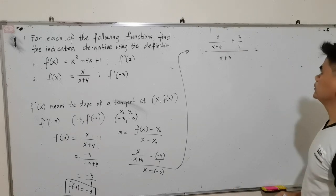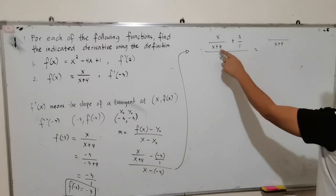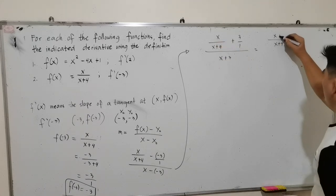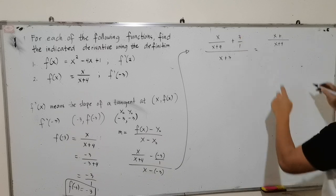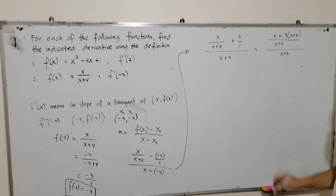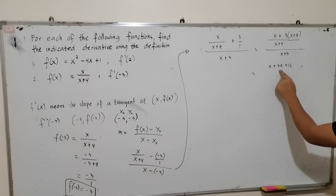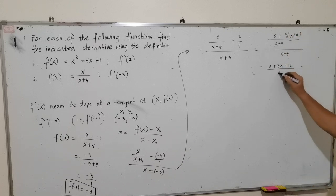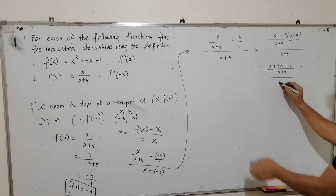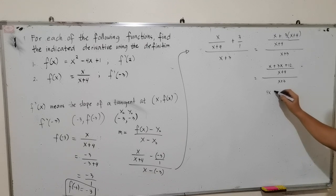Let us solve first the numerator. The numerator will be: x plus 4 divided by x plus 4 is 1 times x, giving x. Plus x plus 4 divided by 1 is x plus 4, times 3, giving 3 times (x plus 4). That gives x plus 3x plus 12, since 3 times x is 3x and 3 times 4 is 12, all over x plus 4. So we come up with 4x plus 12 over x plus 4.